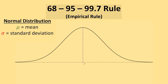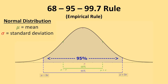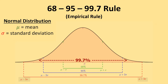What does this rule tell us? The 68 tells us what percent of our distribution lives within one standard deviation of the mean — between the mean minus one standard deviation and the mean plus one standard deviation. Going out two standard deviations gives us 95% of our distribution. And going out three standard deviations gives us 99.7% of our distribution.